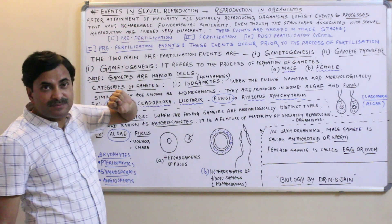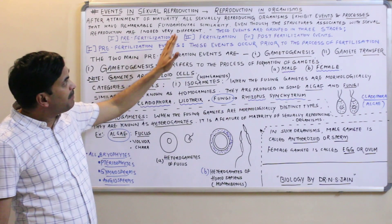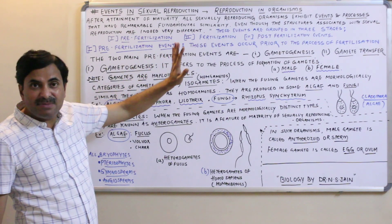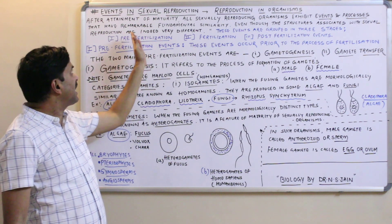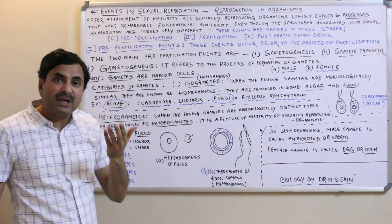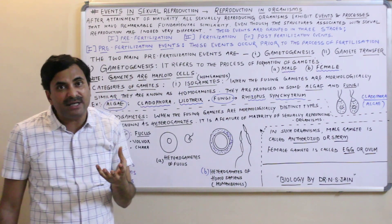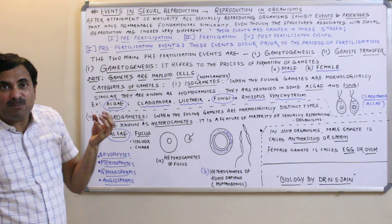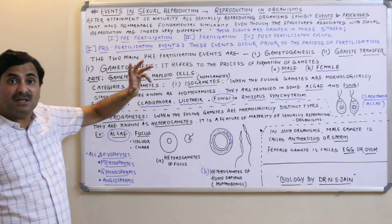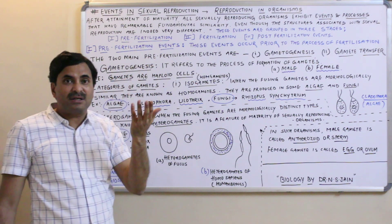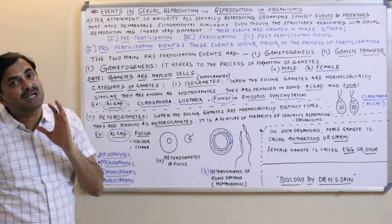After attainment of maturity, all sexually reproducing organisms exhibit some events and processes that are having remarkable fundamental similarity. As soon as the sexually reproducing organisms attain maturity, they undergo certain events and processes which are somewhat similar in all organisms. They are having fundamental similarity, though they are different organisms, but if we talk about reproduction, they have fundamental similarity.